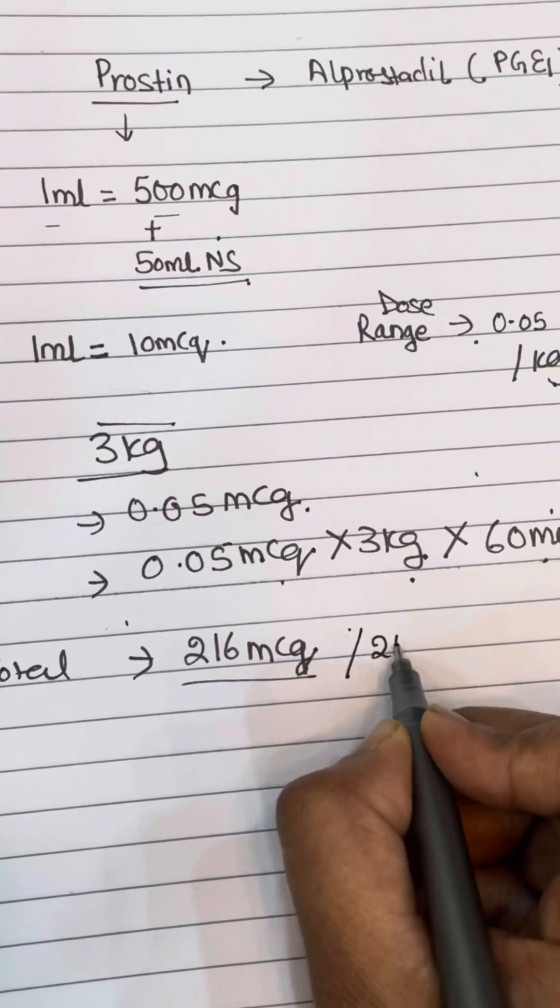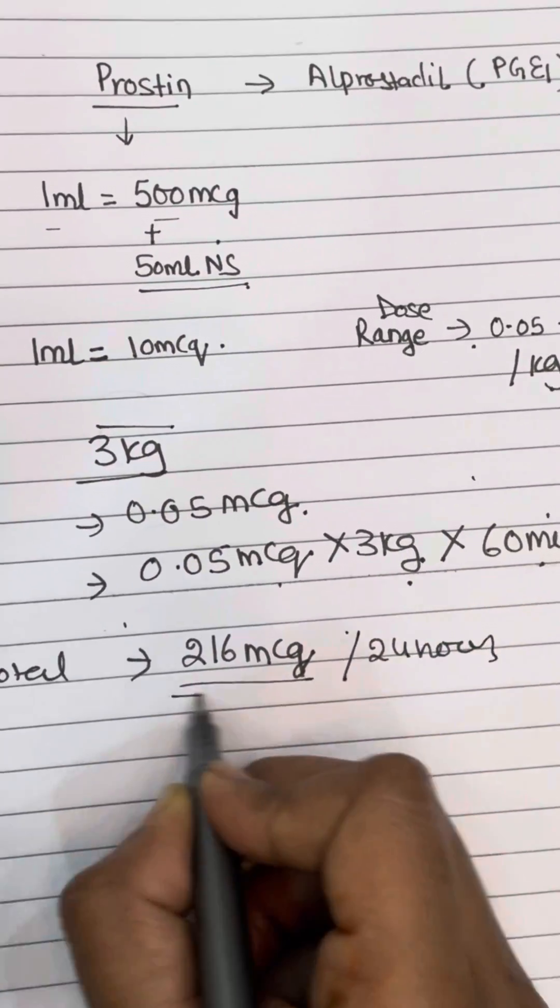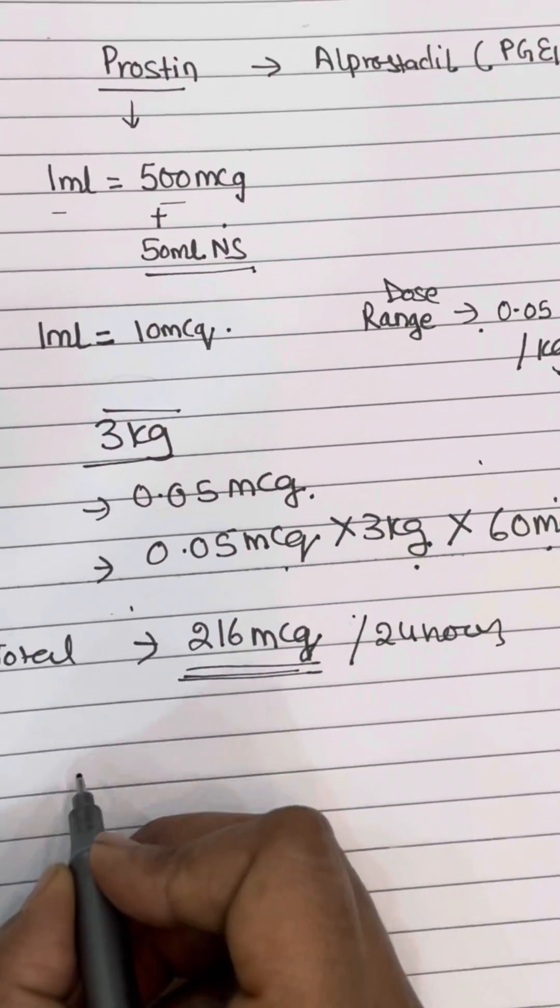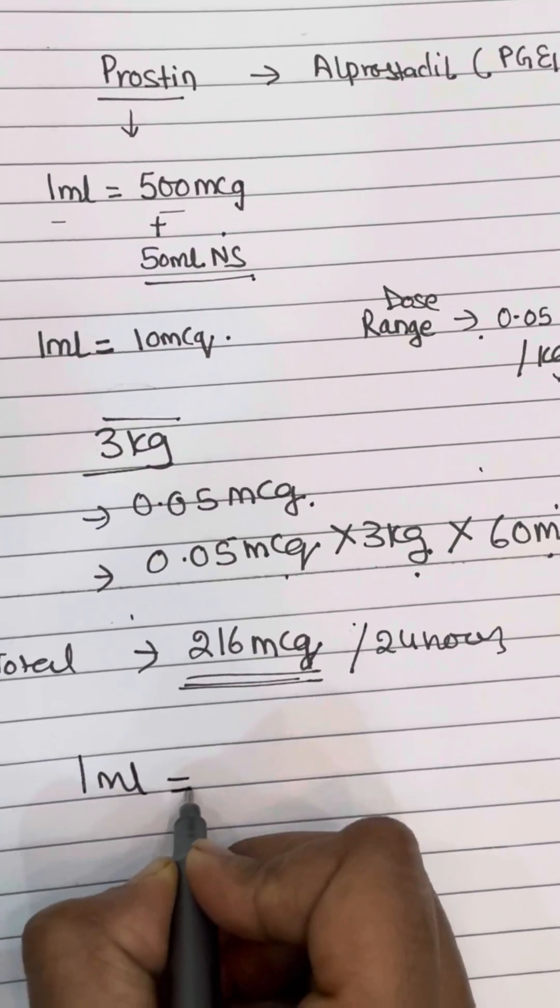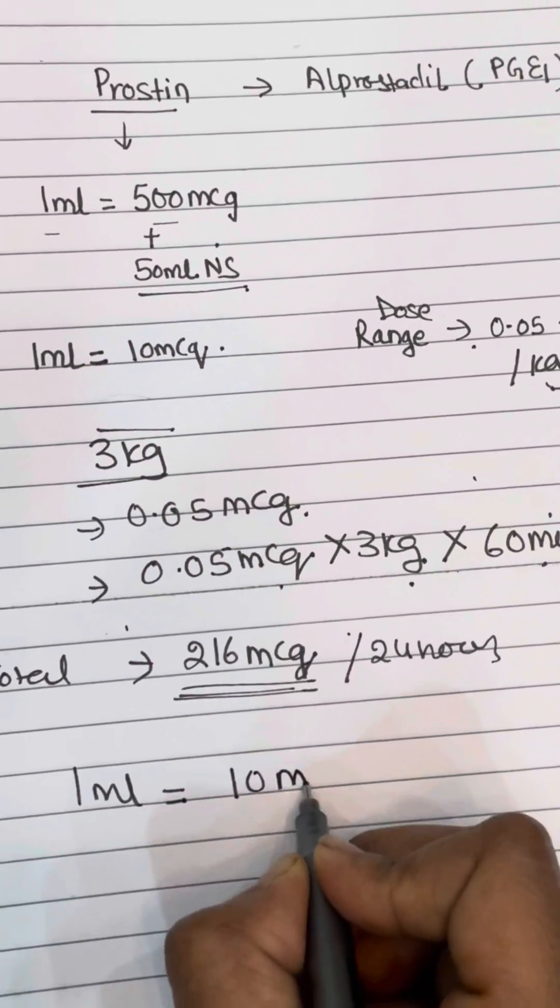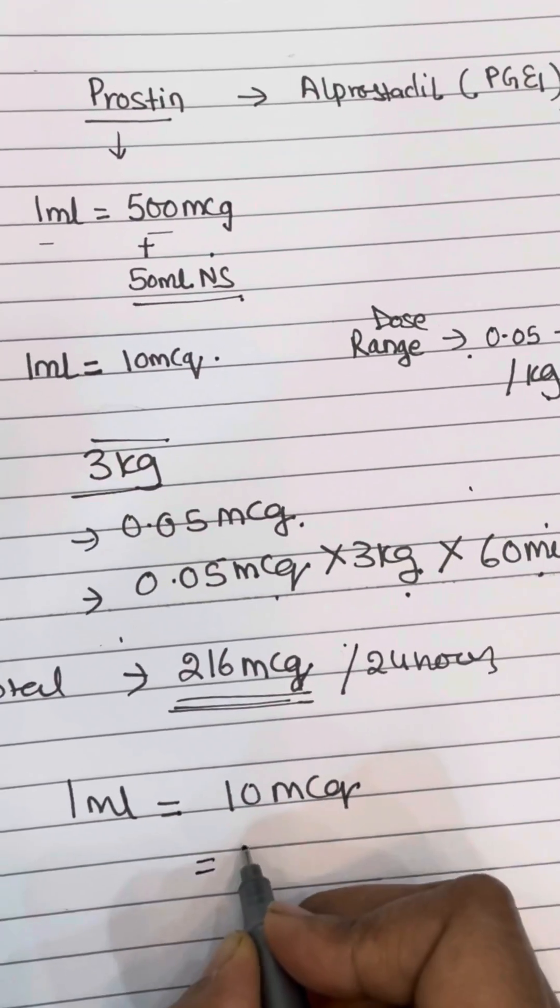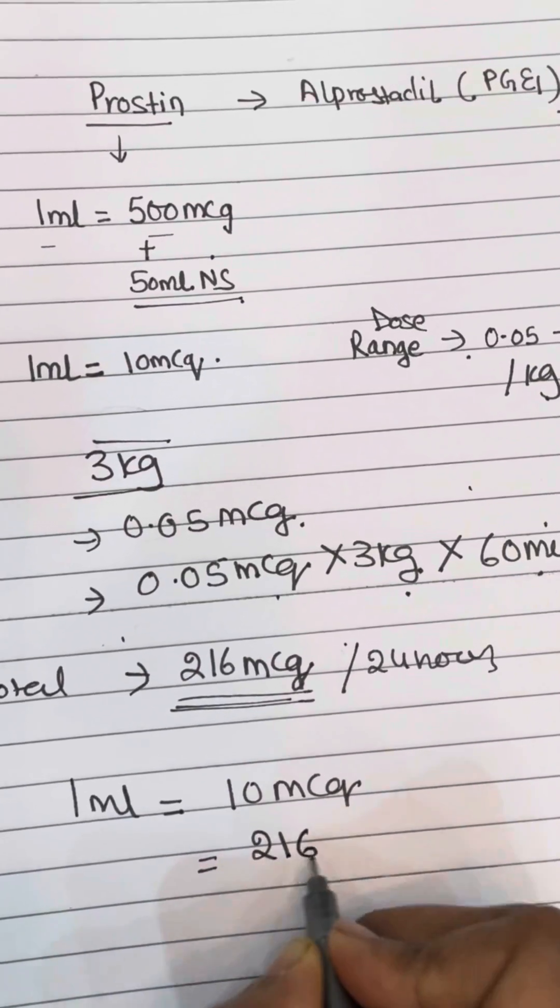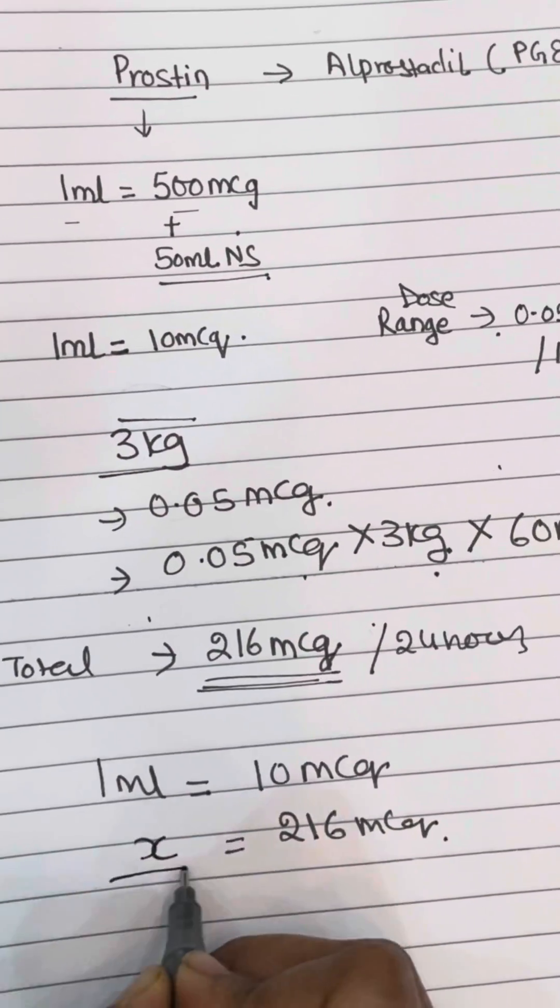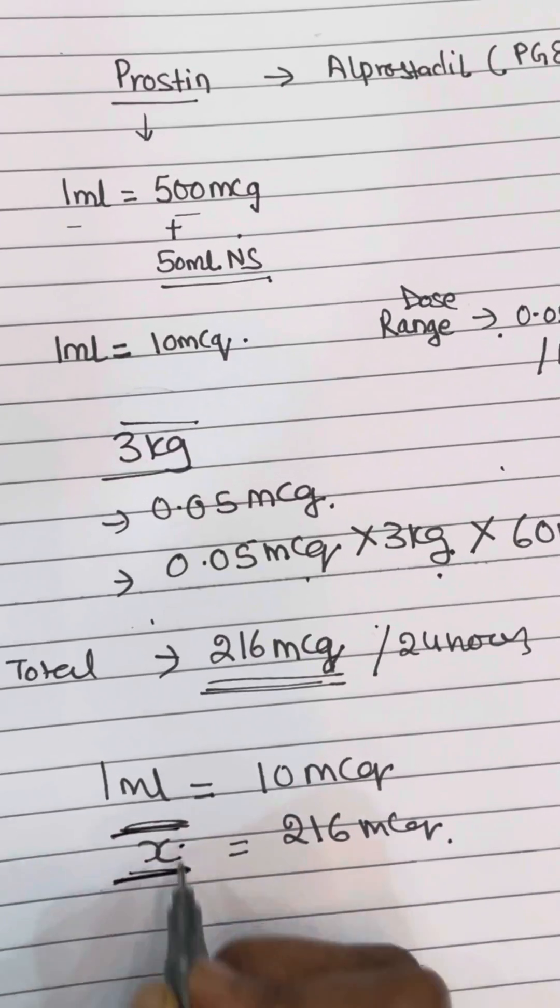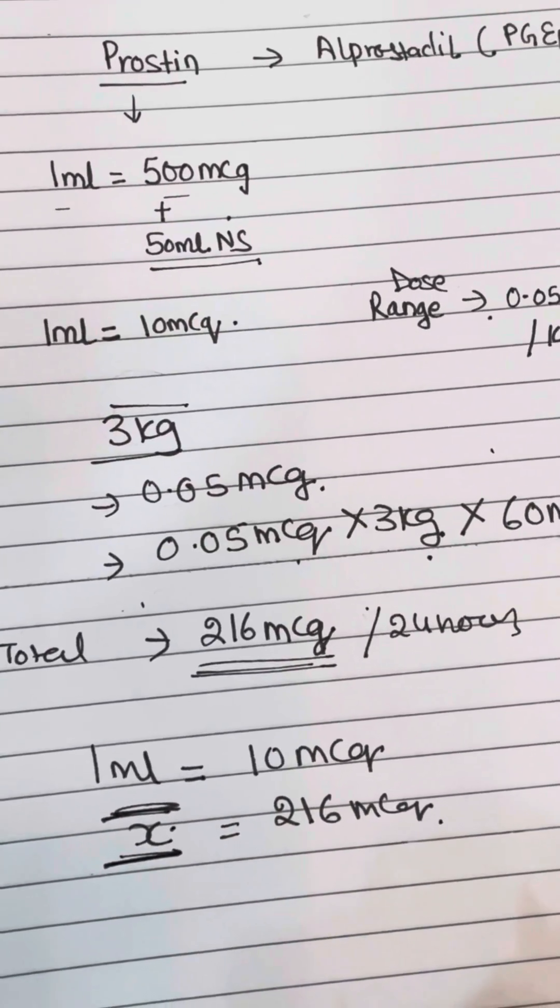That is to be given in 24 hours. This is the total amount that will go to the baby. Now we know the dilution was 1ml equals 10 micrograms, and we are supposed to be giving 216 micrograms in a day, so that will give us the X ml that will go in a day. By calculation it will come out to be...